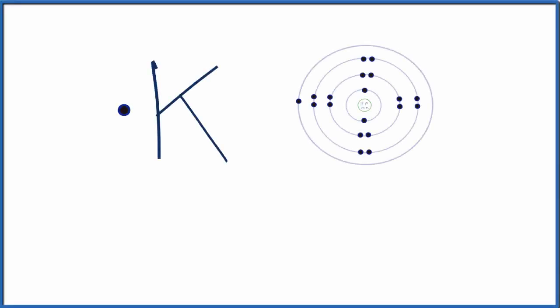In this video, we'll write the Lewis structure for K+, the potassium ion. But before we do that, let's just look at K, potassium, as it's found on the periodic table.